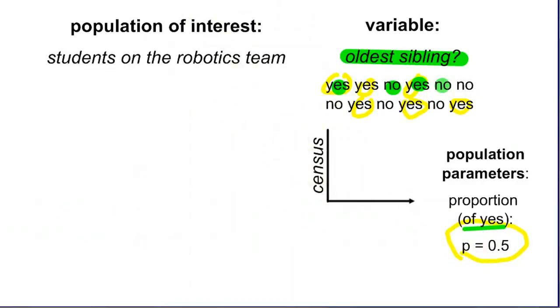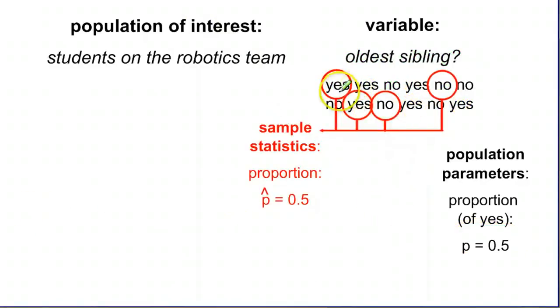That's from taking a census, from asking everyone. Let's take a sample just like we did before. Let's randomly choose four of those answers. We might get a yes, a yes, a no, and a no.